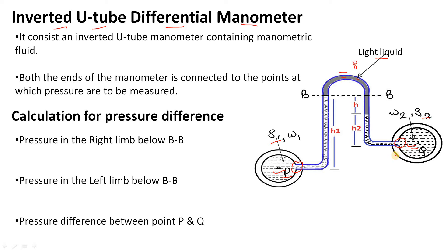To find the pressure difference between points P and Q, we will use the hydrostatic law and then use the balance column method. First, let's calculate the pressure in the right limb below datum line BB. The pressure in the right limb can be written as: PQ minus W·H minus W2·H2.